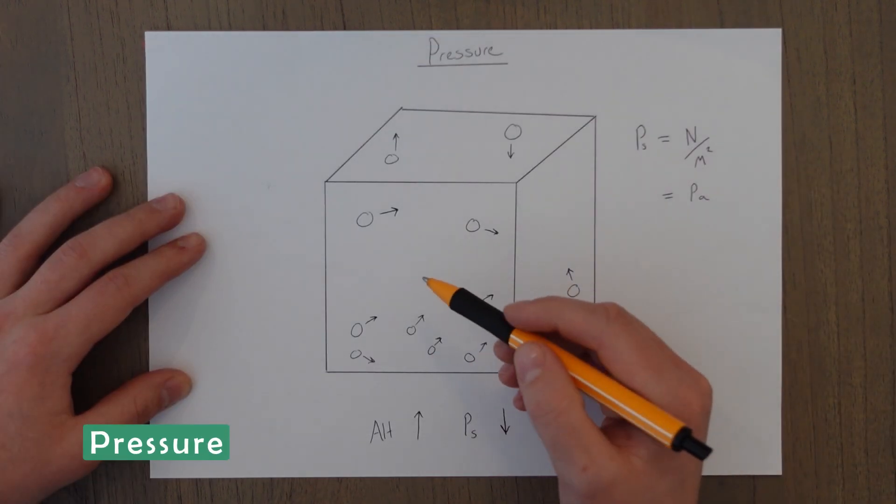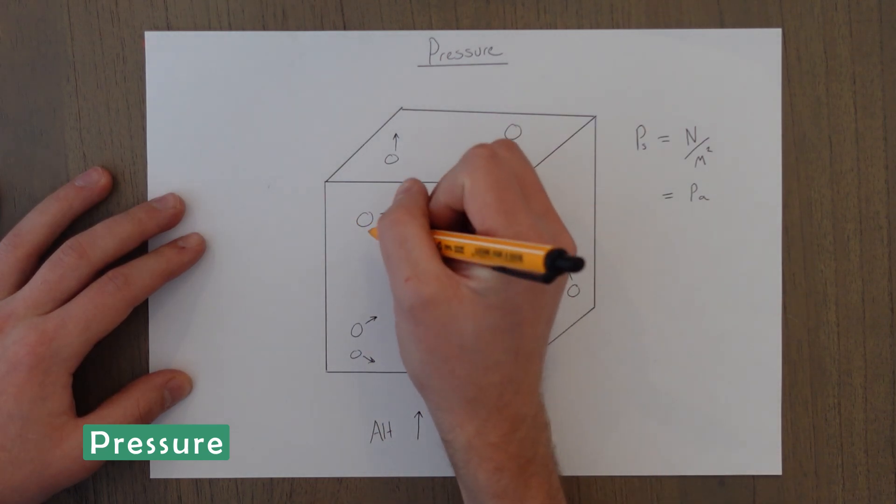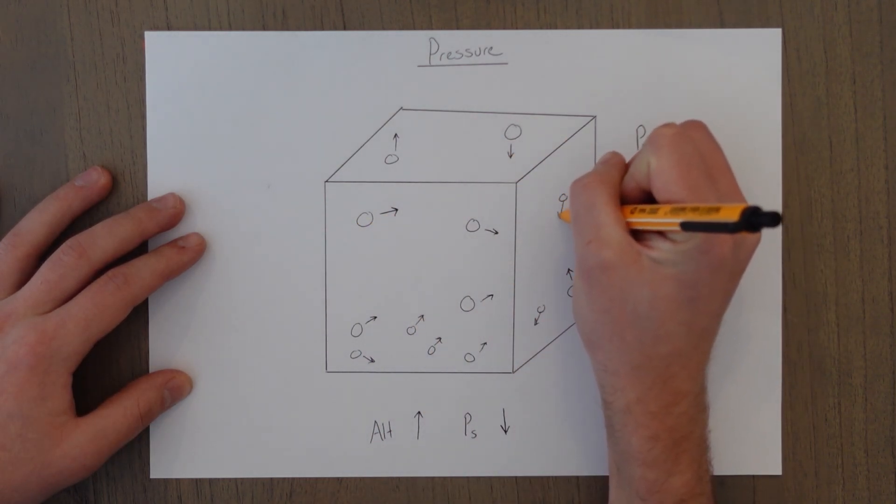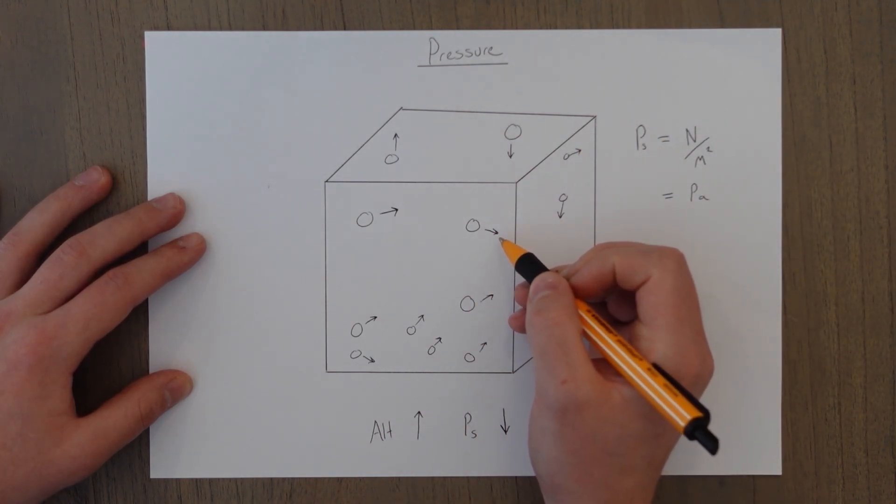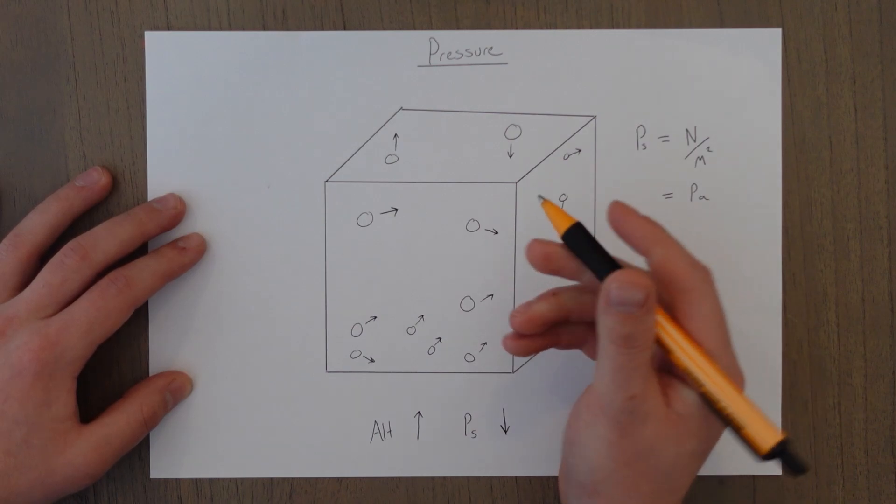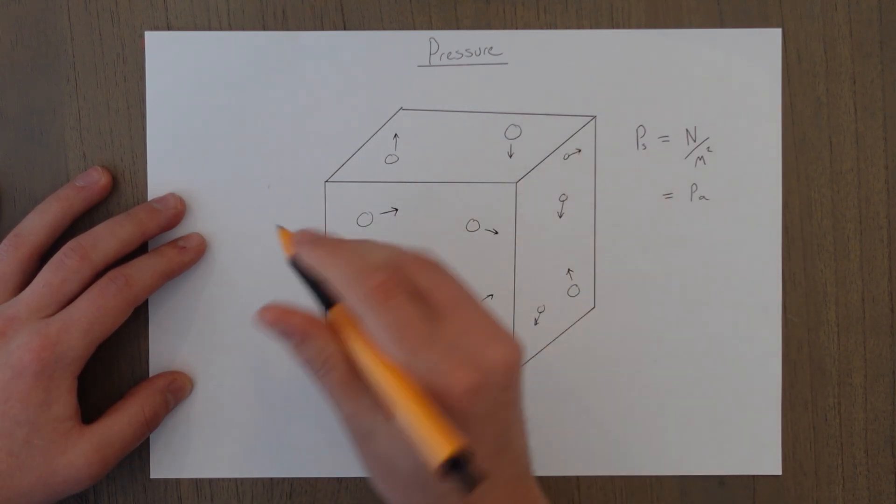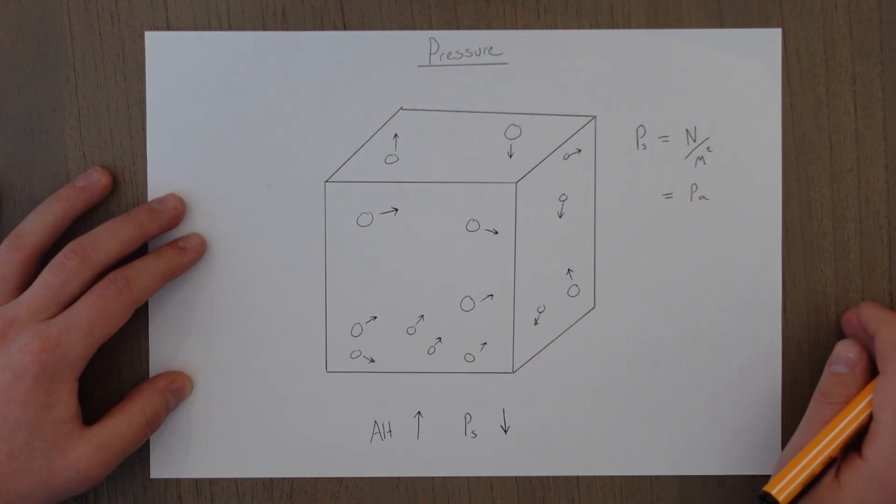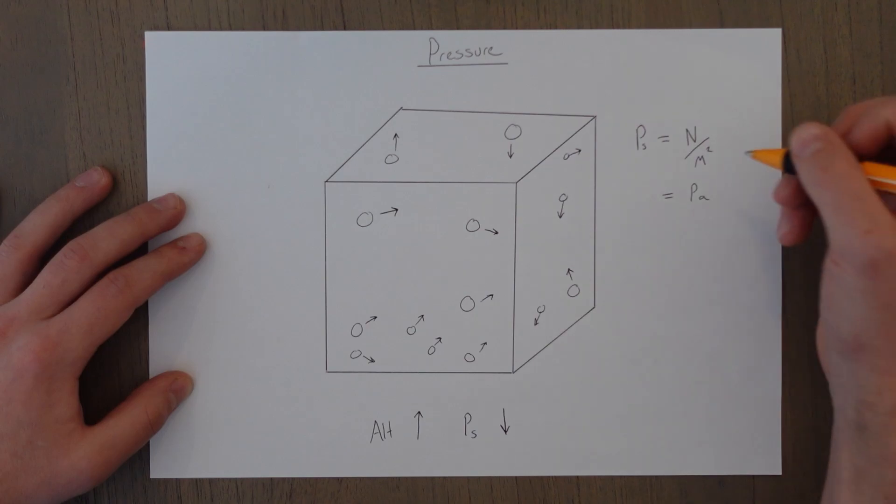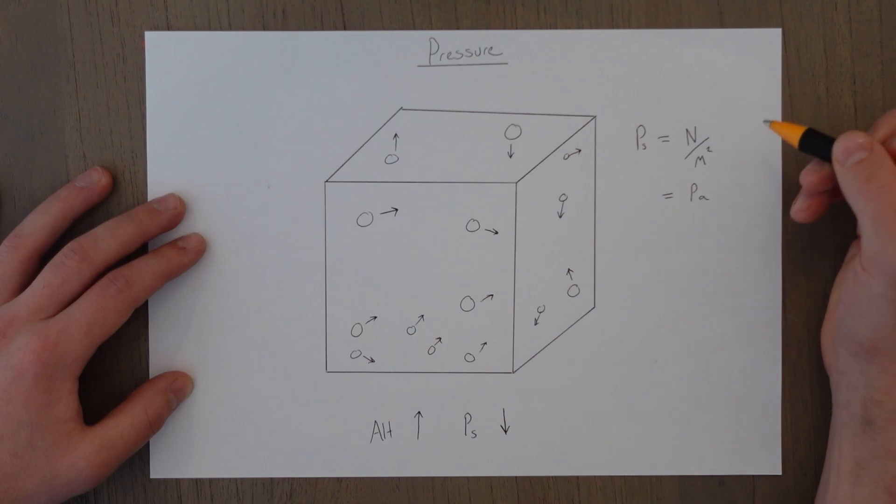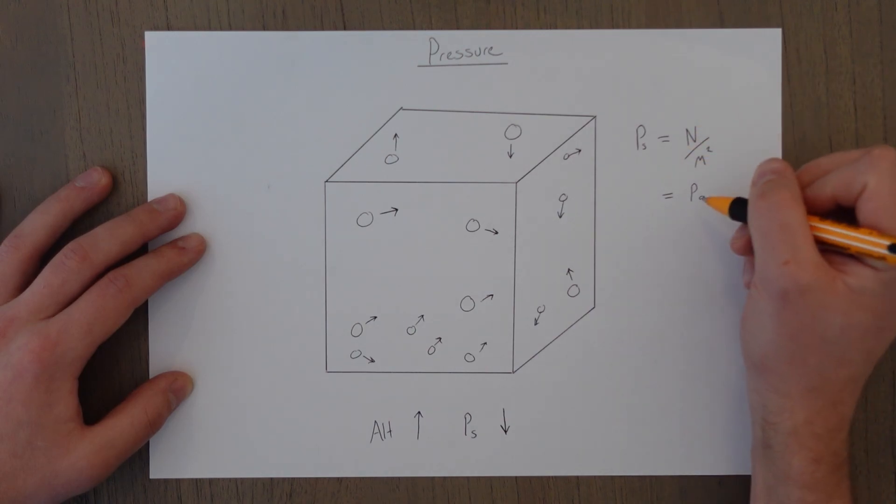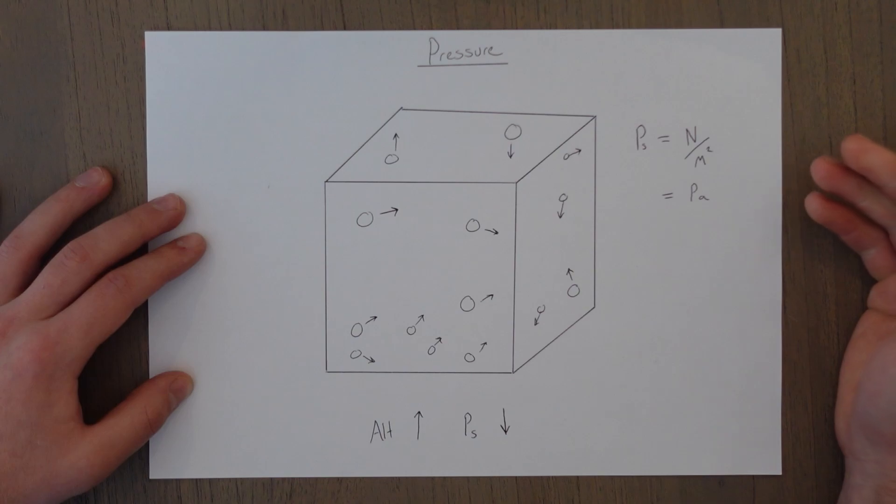All the molecules in the air are moving around constantly in a random motion. And when they collide with any object, they impart a force to that object and it is felt equally in all directions. Static pressure is felt equally in all directions. The measurement for this pressure is the force that is imparted by these molecules per area. So we've got newtons per meter squared and one newton per meter squared is the same as one pascal.